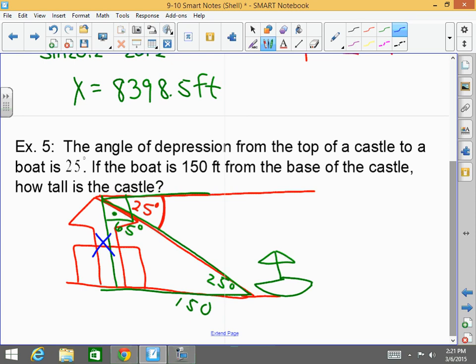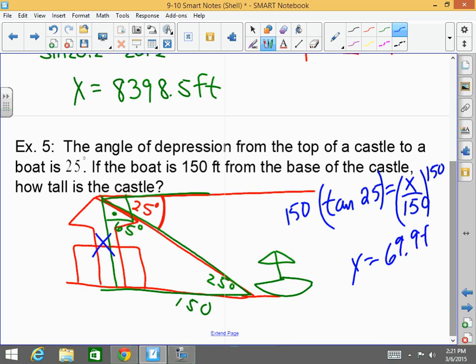What do you guys want to use? Because I don't care. 25, okay. Who am I going to use? Who's activated here? Tangent. So, the tangent of 25 equals opposite over adjacent. Multiply the 150 to both sides. So, 150 times the tangent of 25 will equal 69.9 feet, basically 70 feet tall.